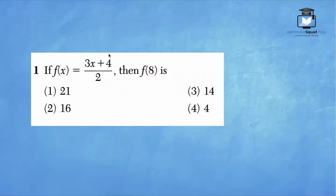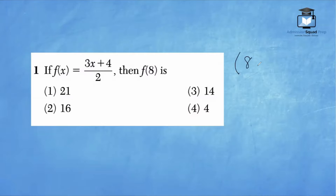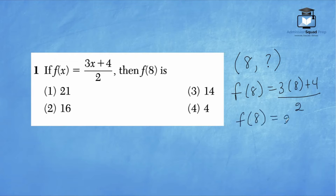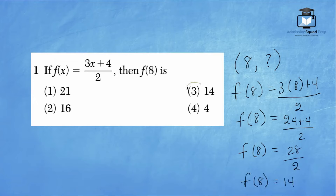For question number one, it states if f of x equals 3x plus 4 divided by 2, then f of 8 is. We are evaluating the value of y when x equals 8, so we replace x with 8. f of 8 equals 3 times 8 plus 4, all divided by 2, which is 24 plus 4 divided by 2, equals 28 divided by 2. Our final answer is 14. The correct answer is choice 3.